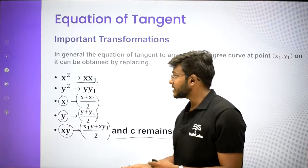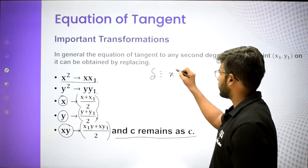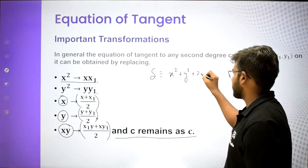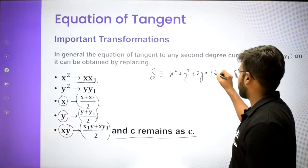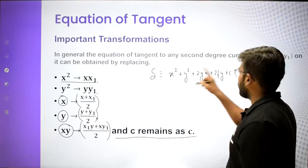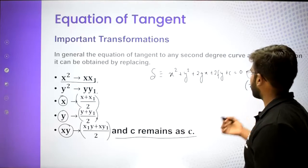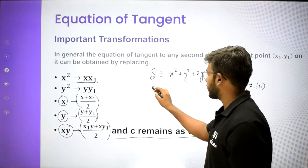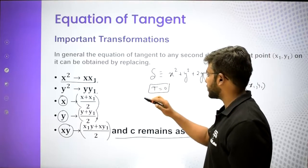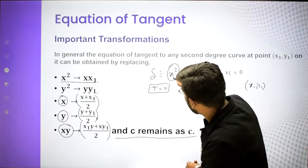Let me repeat. If your equation of the circle is x² + y² + 2gx + 2fy + c = 0, and we want to write the equation of tangent at point x1, y1, it will be given as T equal to 0. In place of x², write x·x1. In place of y², write y·y1. For the linear x term, write (x + x1)/2.